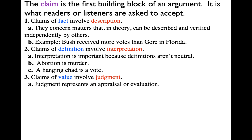A third kind of claim is a claim of value, which involves judgment — you might say appraisal or evaluation. 'The United States Supreme Court is biased' is a claim of value advanced by many of Al Gore's people once the Supreme Court finally decided the case in Bush's favor, limiting the recount started by the Florida Supreme Court. The decision was a 4-3 split — all four justices who took Bush's side were Republican appointees, and all three who took Gore's side were Democratic appointees. So that left many claiming the United States Supreme Court was biased.